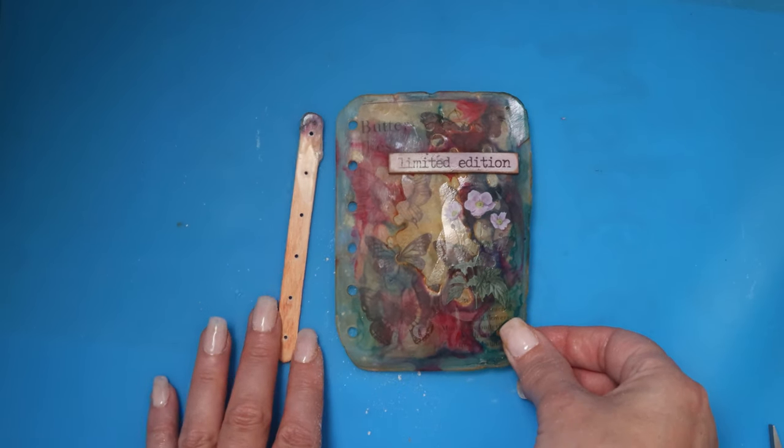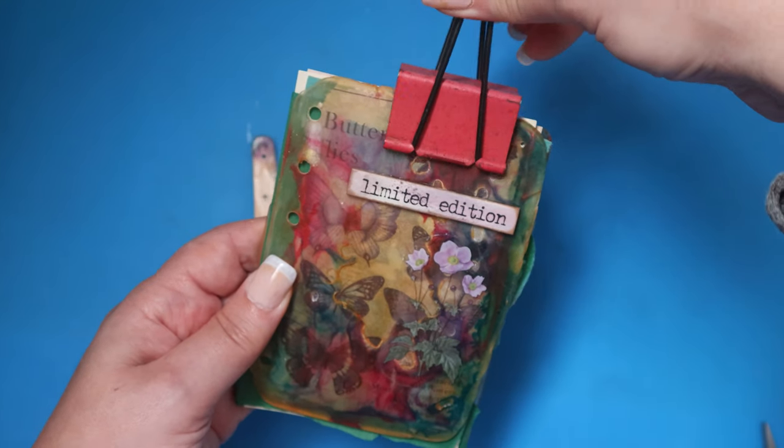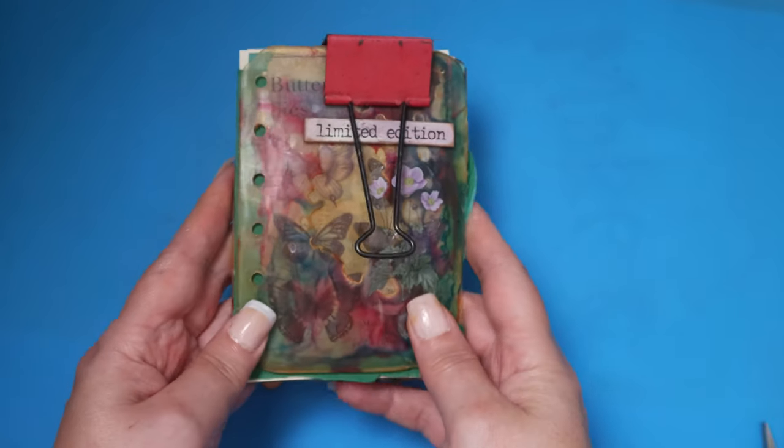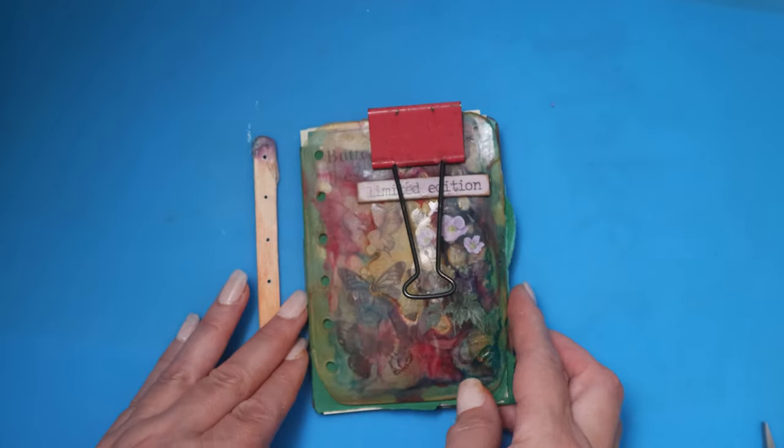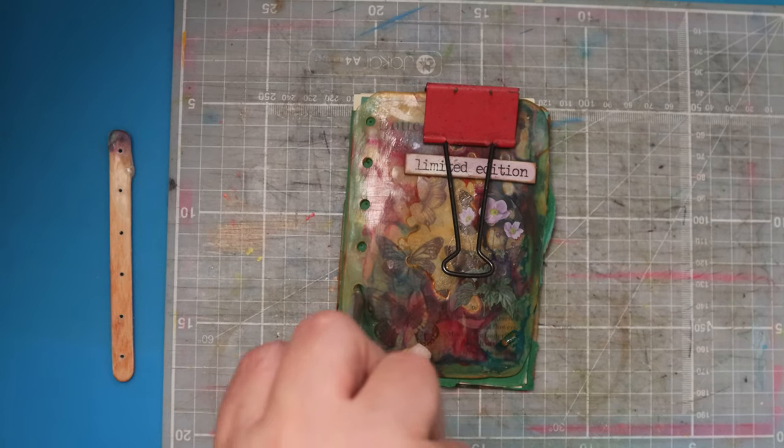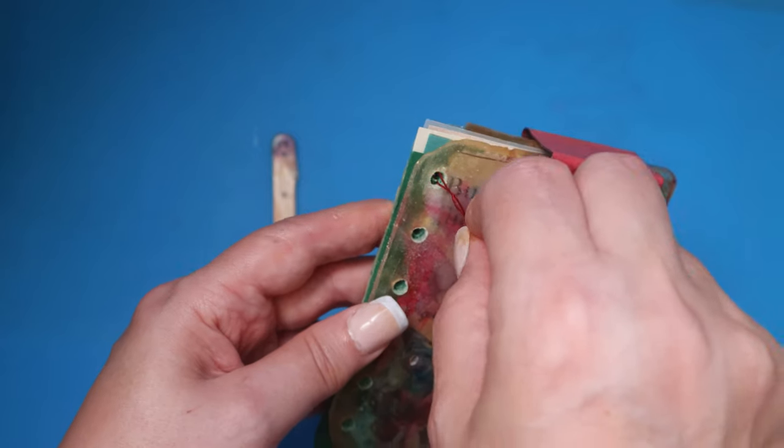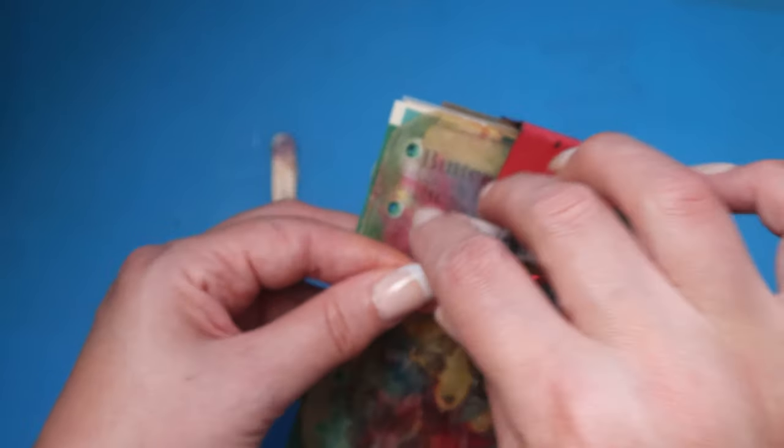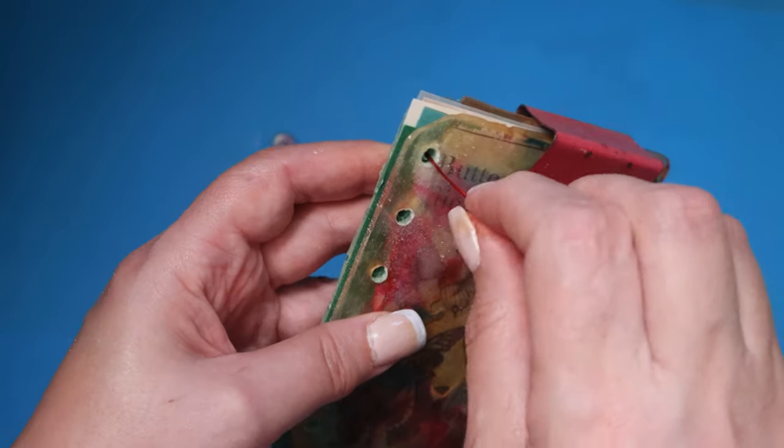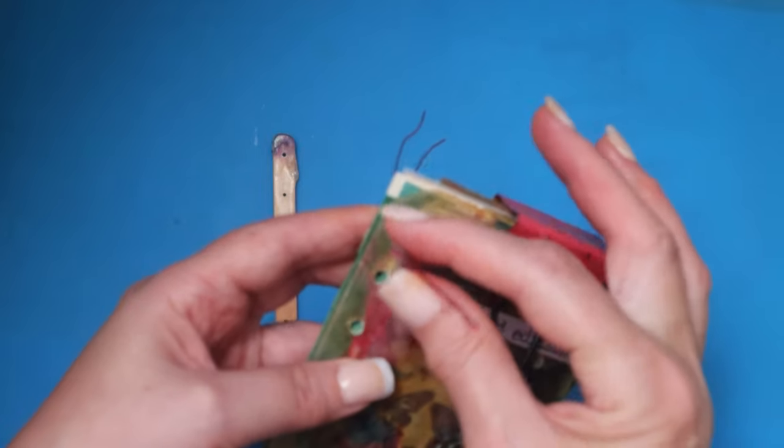To bind everything together including the pages that I've torn to size, I first of all put a bulldog clip around everything. I pierce holes in the paper and I'm using jewelry wire in red to bind all the pages together and bind them to the stick. This seemed to work quite well, although it does look very grungy. It may not be your style.